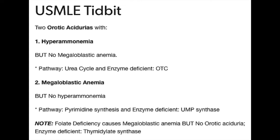To distinguish between urea cycle defects and plain orotic aciduria, you have to look for the presence or absence of hyperammonemia. Hyperammonemia is seen in the urea cycle defects, but it's not seen in orotic aciduria. You treat orotic aciduria by giving oral uridine, bypassing the defective step in this disease.